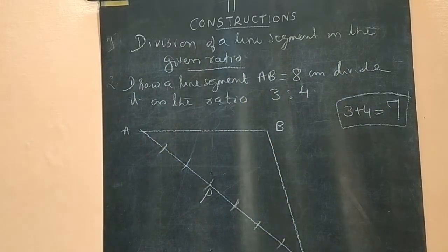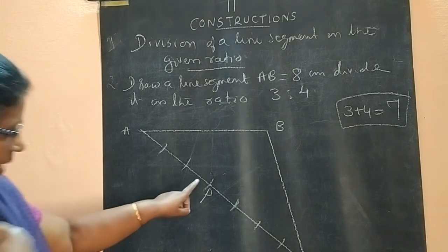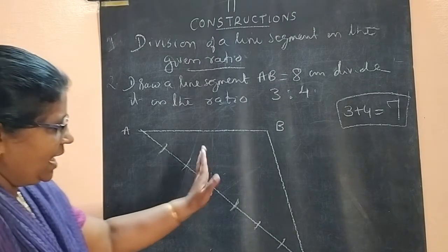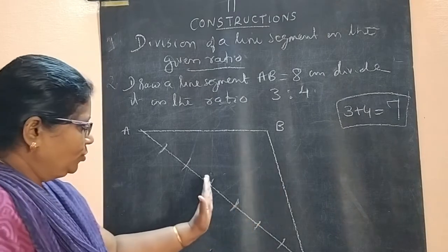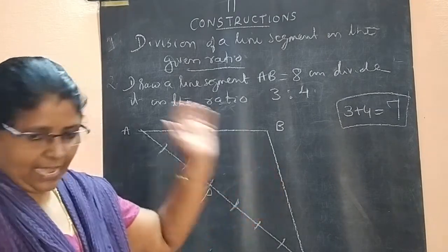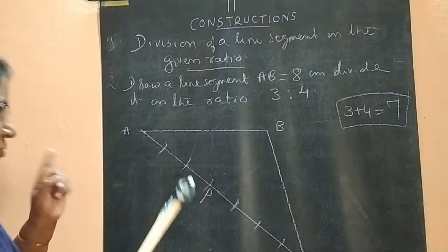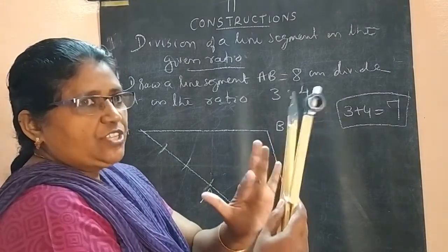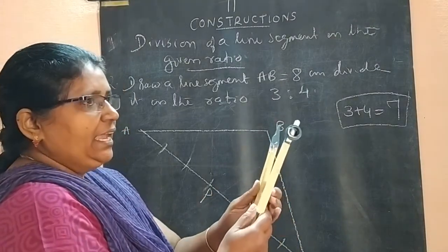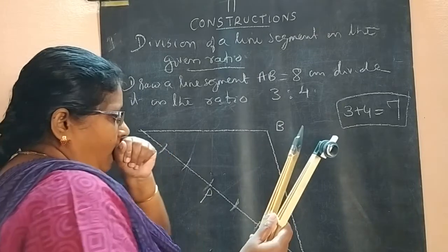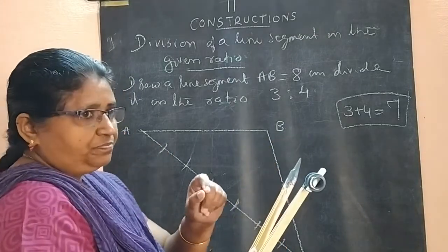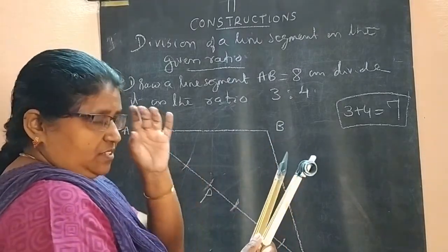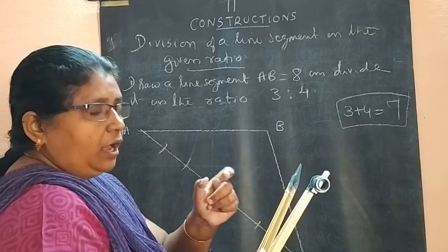Now through P, draw a line parallel to this. For that, you increase the radius or decrease the radius.